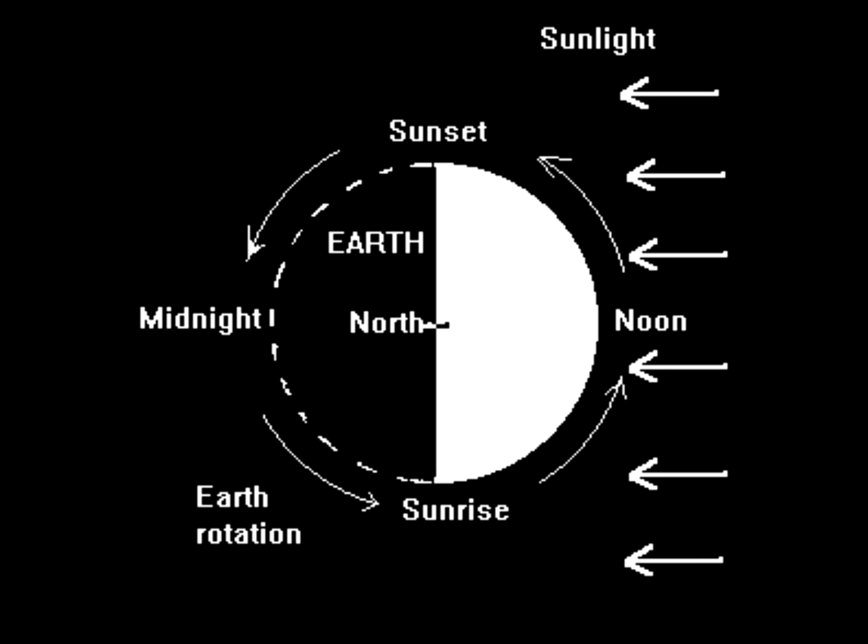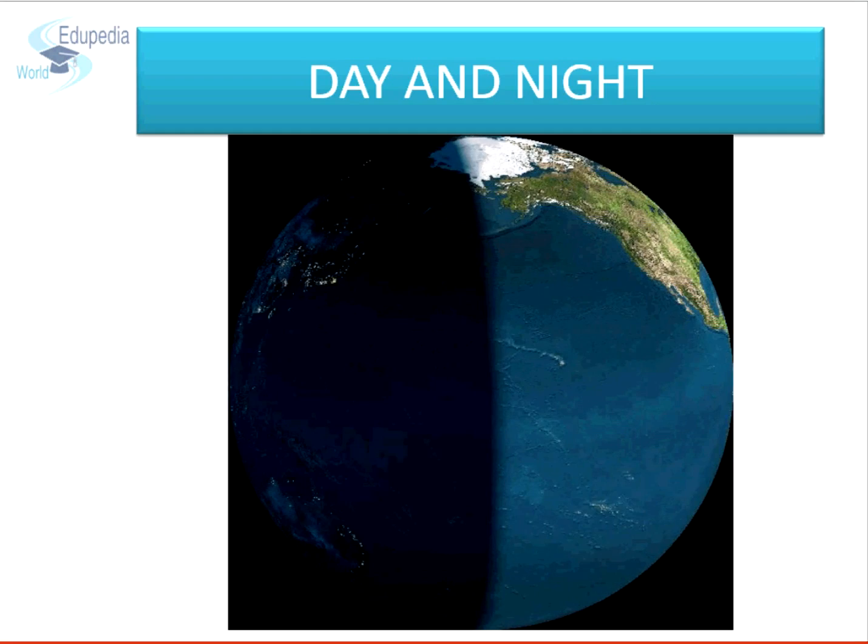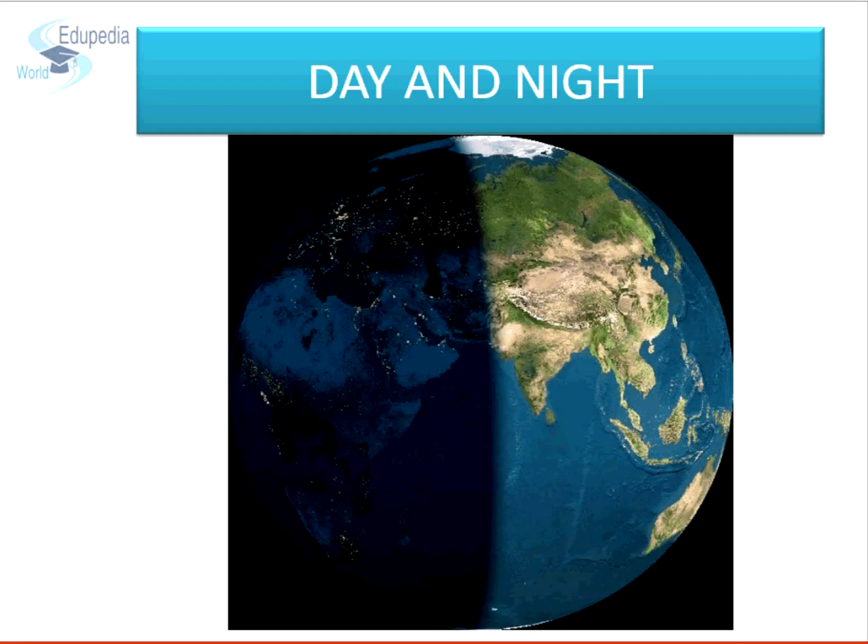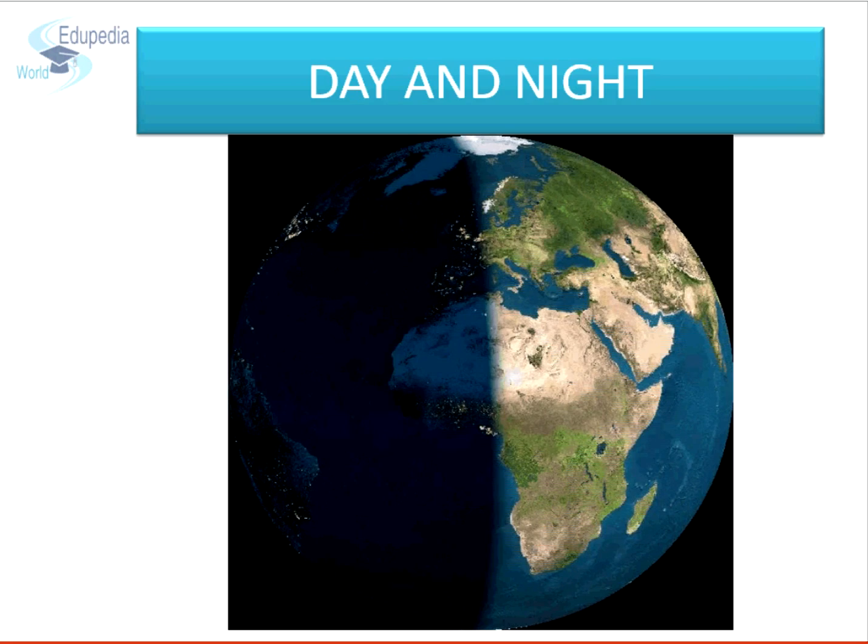The boundary between the sunlit part of the Earth and the dark part forms the circle of illumination. This circle divides the Earth into two hemispheres. One, the lit one that receives sunlight and the other in darkness. Every part on the Earth moves into these hemispheres in a periodic manner.